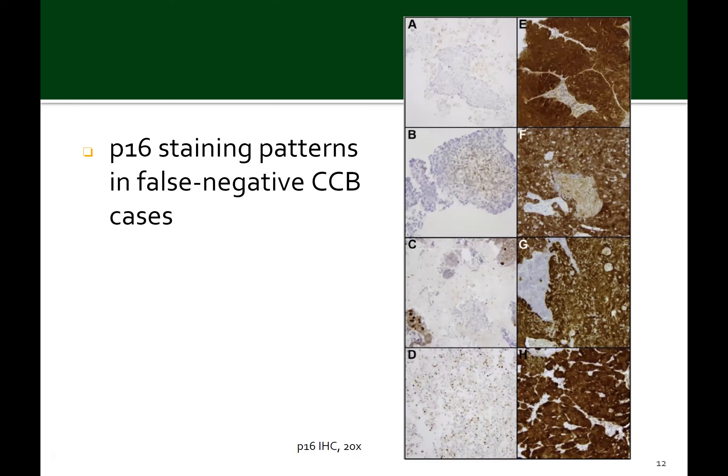Next, looking at the P16 patterns in the false negative cytolite cell block cases — nearly half of the P16 cytolite cell blocks were false negative. They showed 0 to 10% nuclear staining, as in panels A and D, and 0 to 65% cytoplasmic staining, as in panels A and C. Panel B illustrates weak intensity staining, while panels C and D show stronger intensity. Panel D also highlights what was sometimes seen: isolated tumor cells without any intact tissue fragments. The subsequent surgical material, shown in the right panels, is clearly P16 positive.